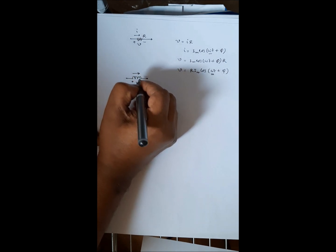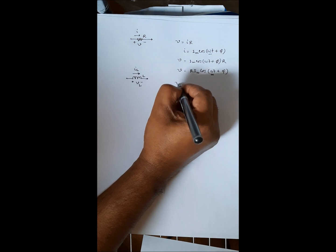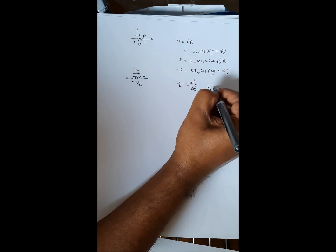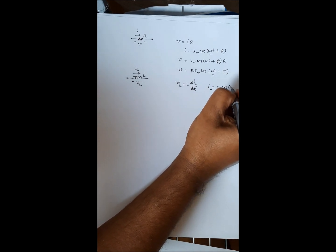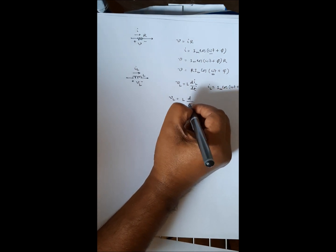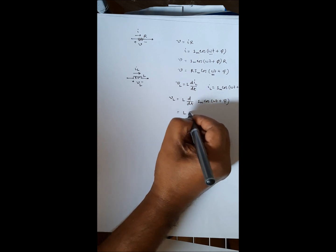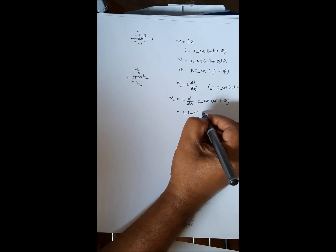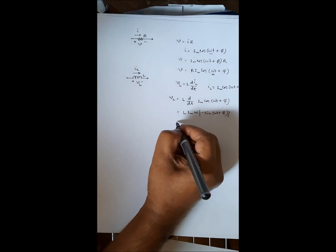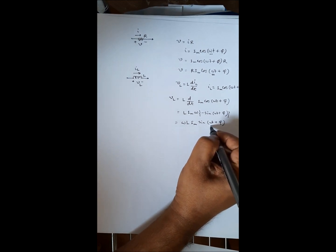Likewise, consider an inductor. The voltage across an inductor is V_L = L·(dI_L/dt). If I assume I_L = I_m·cos(ωt + φ), then V_L = L times the derivative of I_m·cos(ωt + φ). The derivative of cosine is negative sine, so V_L = −L·I_m·ω·sin(ωt + φ), which becomes ω·L·I_m·sin(ωt + φ).